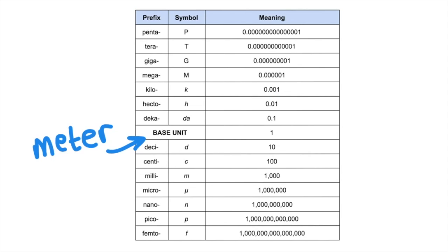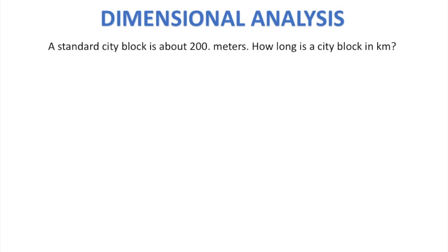Converting within the metric system is absolutely essential when studying or practicing science. There are a few different ways to convert, but we are going to learn the dimensional analysis system because it is the most powerful and transferable to other contexts. In dimensional analysis, the goal is to cancel out the unwanted unit and replace it with the desired unit.